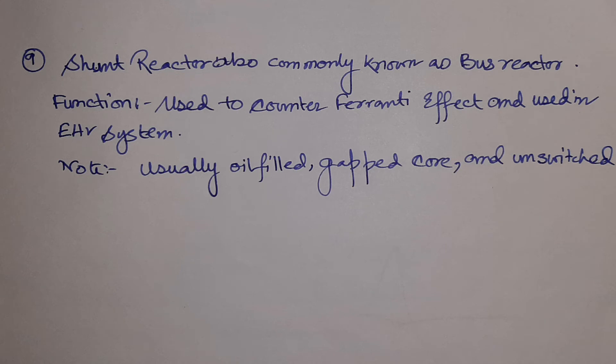The next equipment is the shunt reactor, also known as a bus reactor because it is connected with the substation bus bar. Its function is to counter the Ferranti effect in EHV systems. The Ferranti effect occurs on long transmission lines that are under-loaded or no-loaded, where the receiving-end voltage rises above the sending-end voltage due to capacitance. Shunt reactors absorb reactive power to maintain voltage at the desired level. They are usually oil-filled, gapped-core, and unswitched.